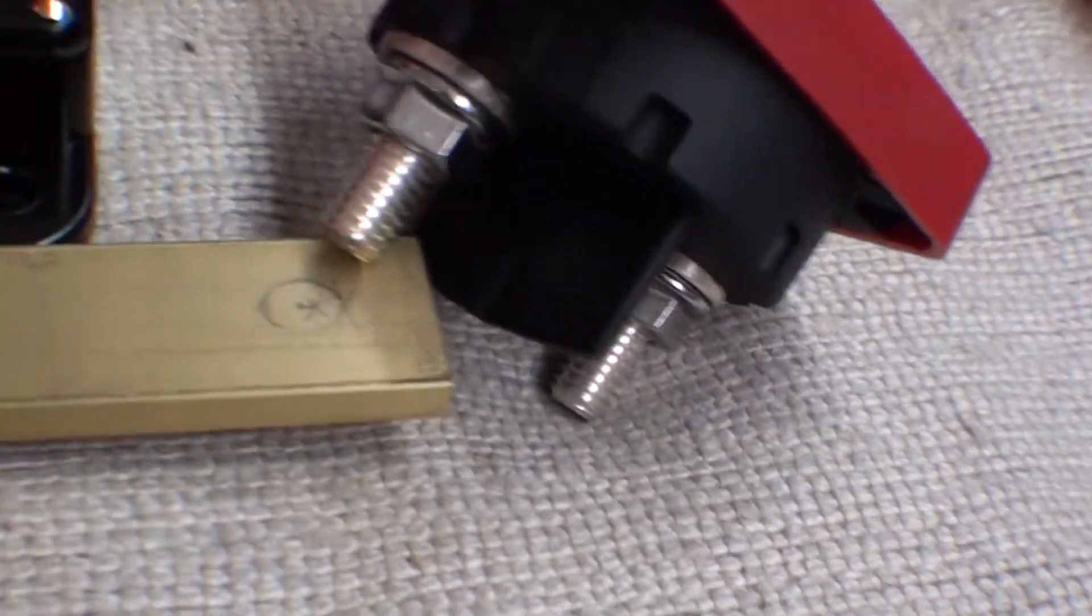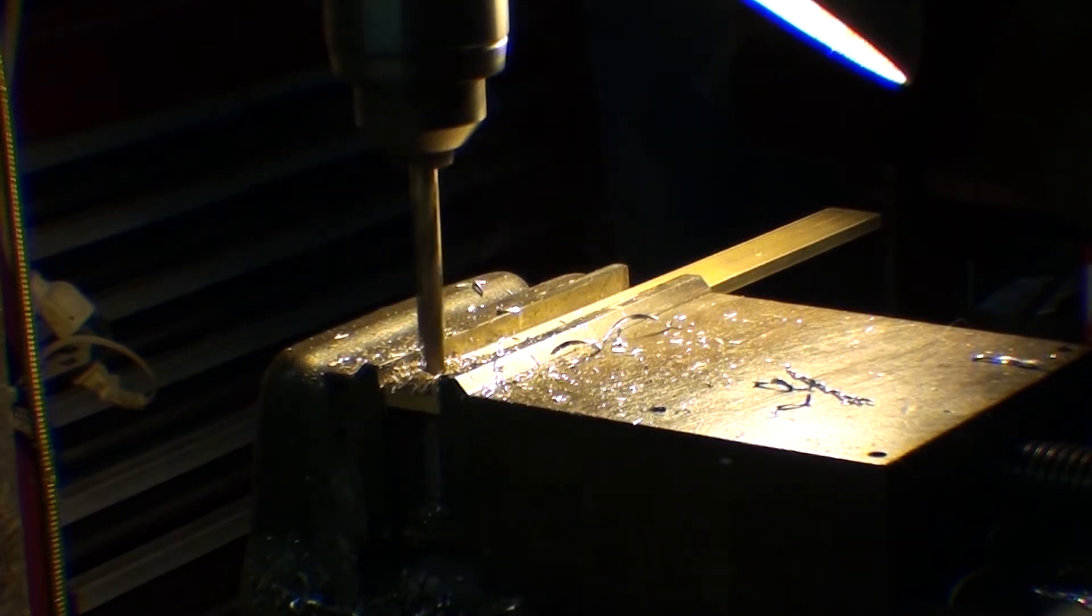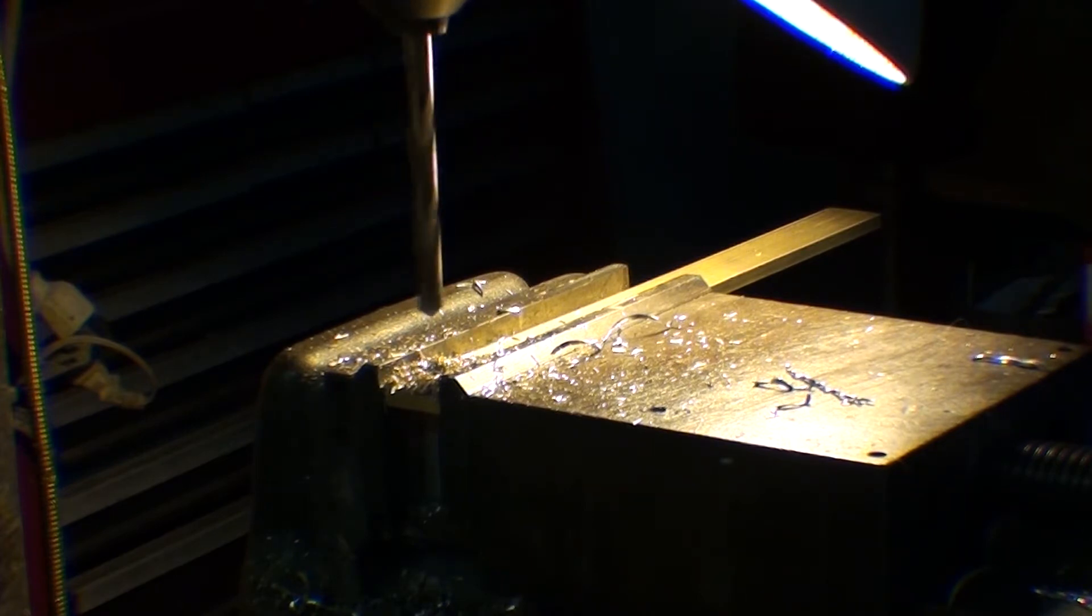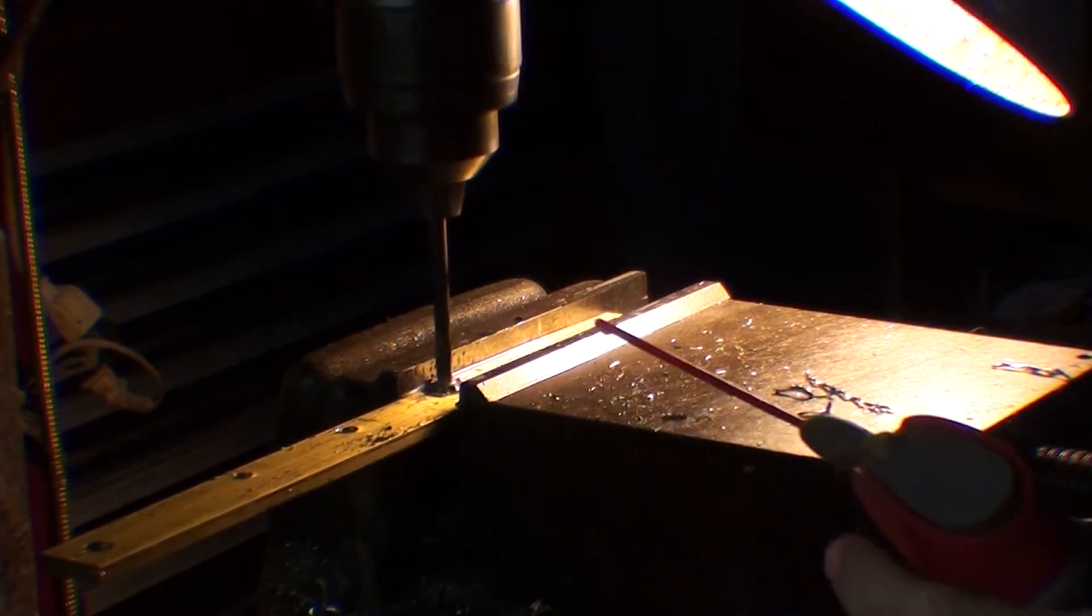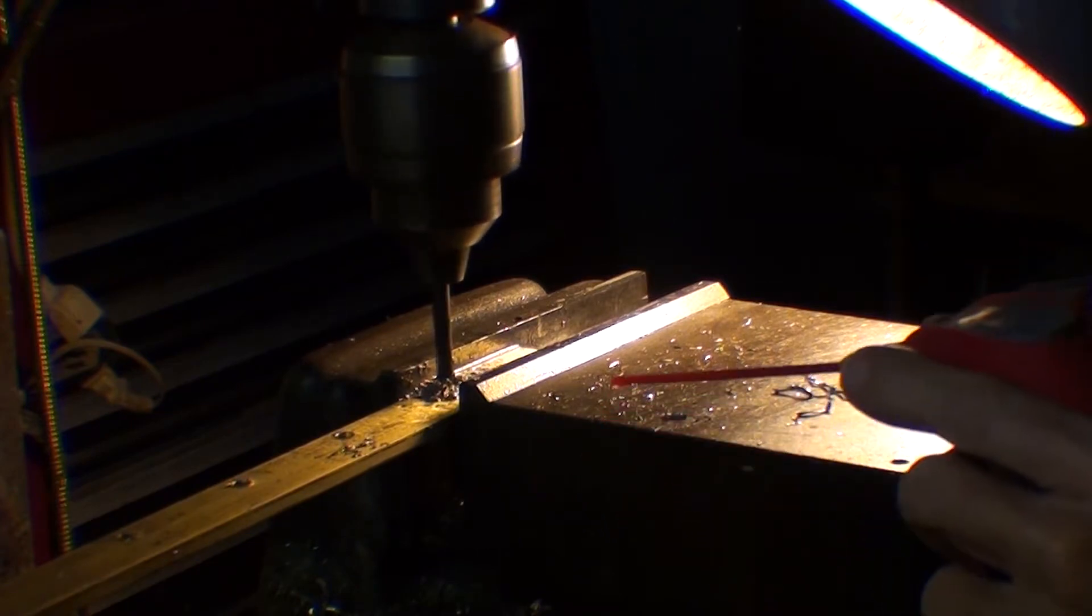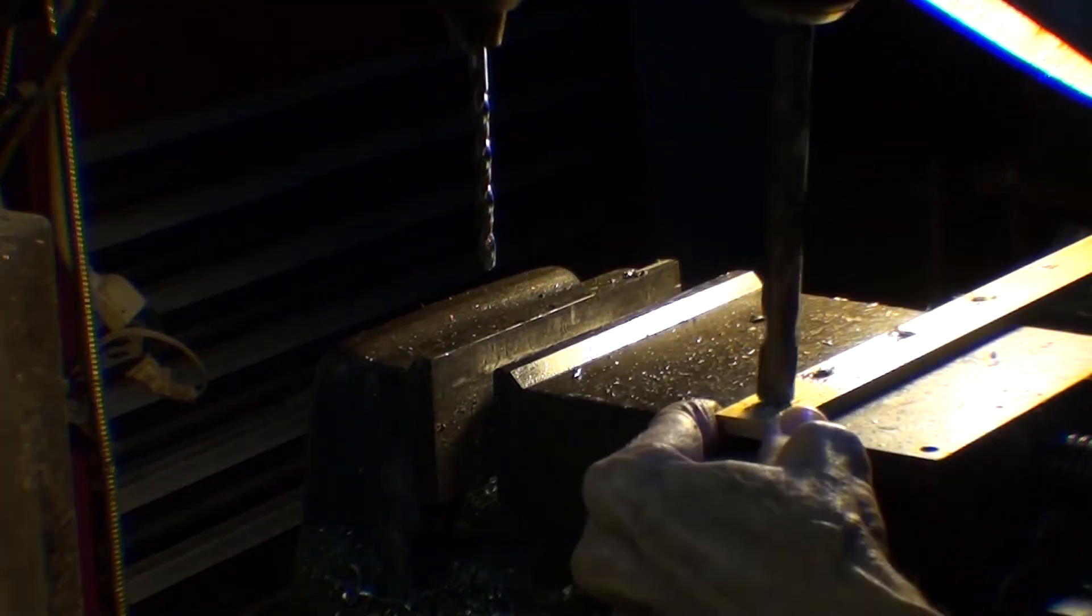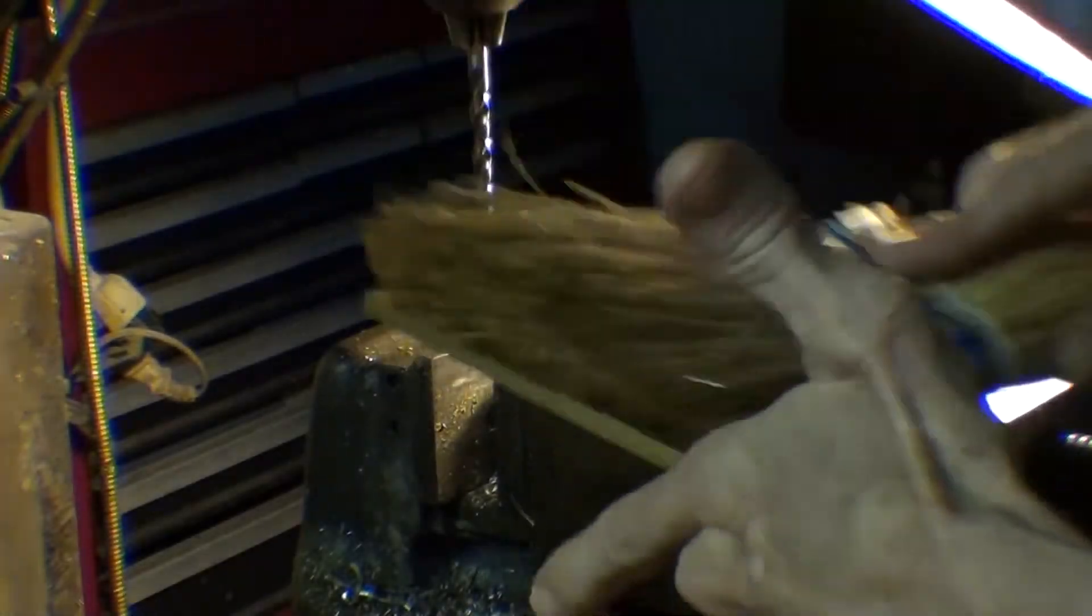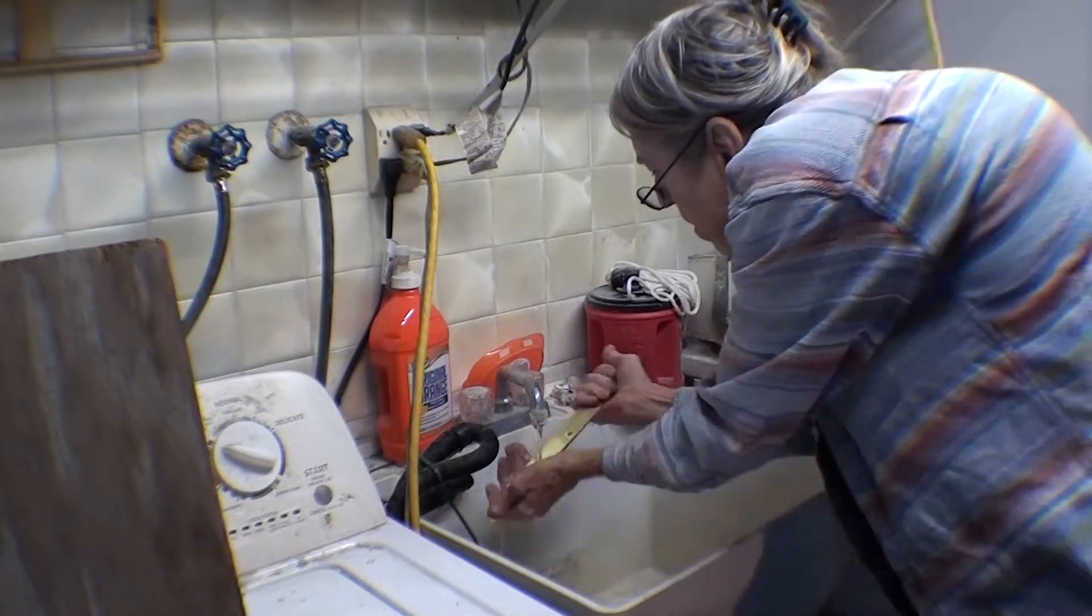This is one inch by quarter inch brass bar and I've marked it where I want to drill holes to mount the circuit breaker and the shutoff switch. I'm using another drill to deburr the holes, and now that the part is done I'm checking to make sure the bolts fit through the holes. I'm using some degreaser to get rid of the oil that was on the part.